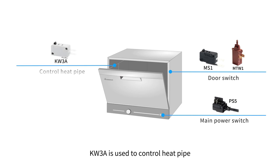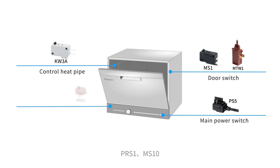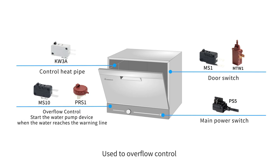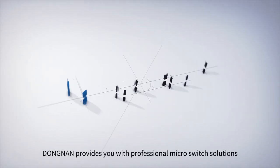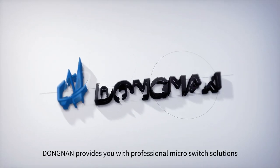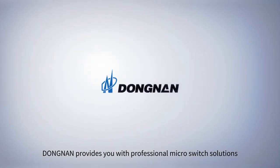KW3A is used to control the heat pipe. PRS1 and MS10 are used for overflow control, starting the water pump device when the water reaches the warning line. Dong Non provides you with professional microswitch solutions.